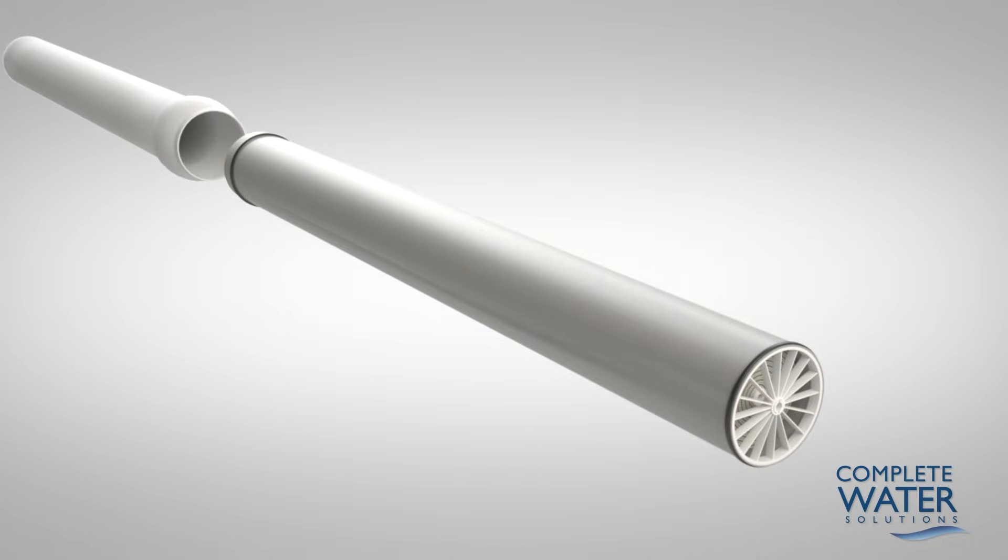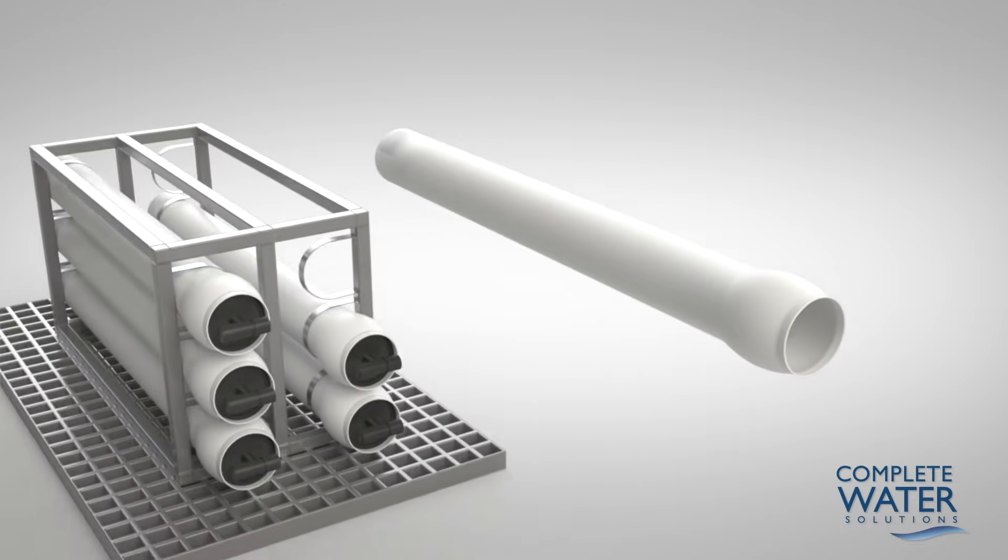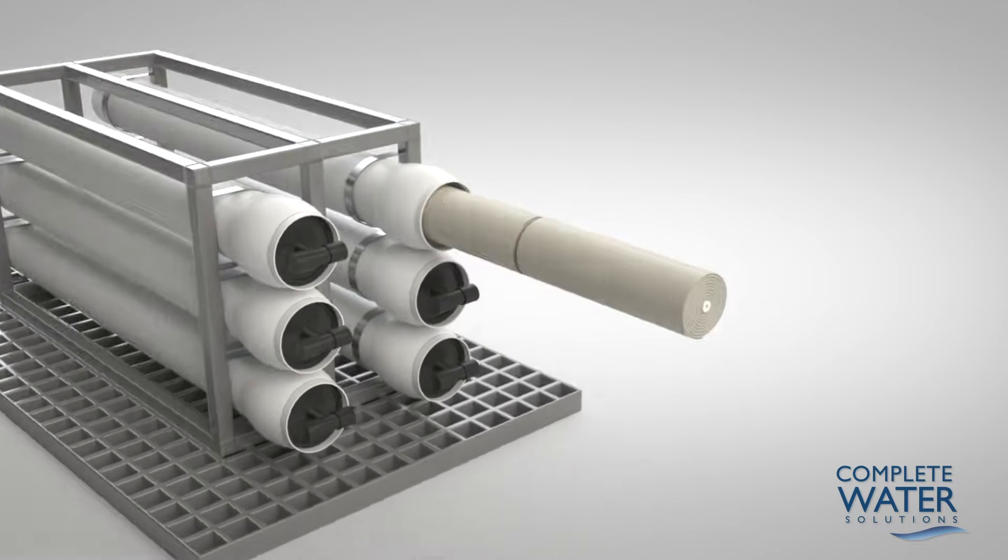In this Complete Water Solutions reverse osmosis example, there are six reverse osmosis trains, each with three stages. This design produces the highest amount of reverse osmosis water with reduced concentrate or waste.